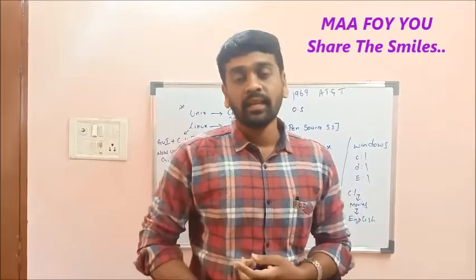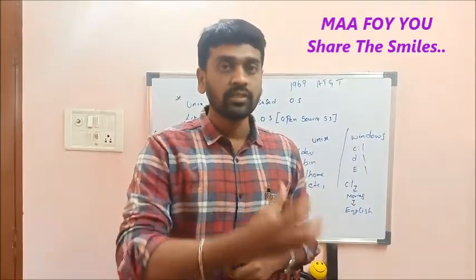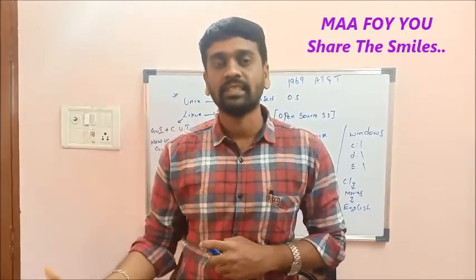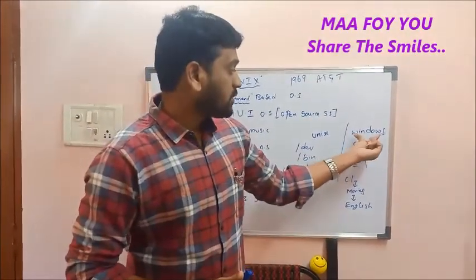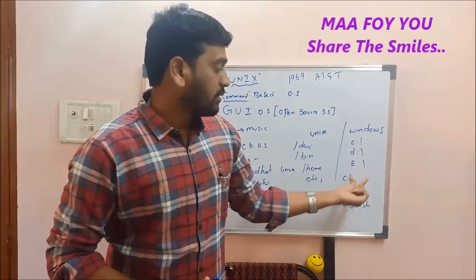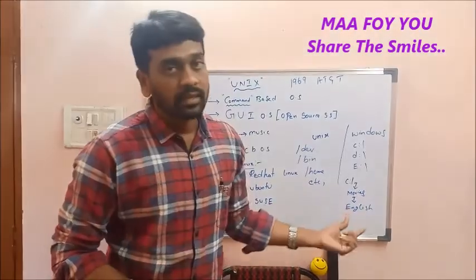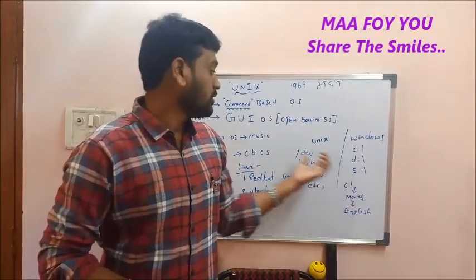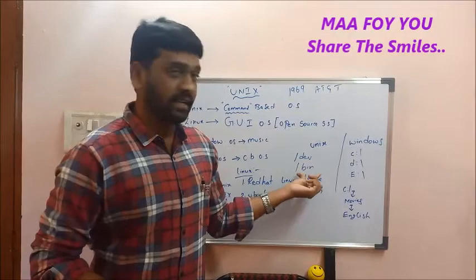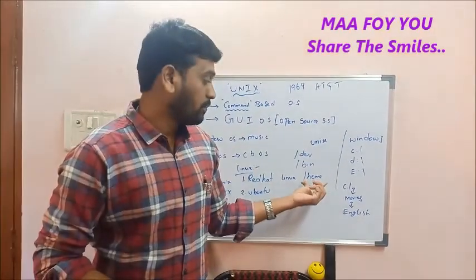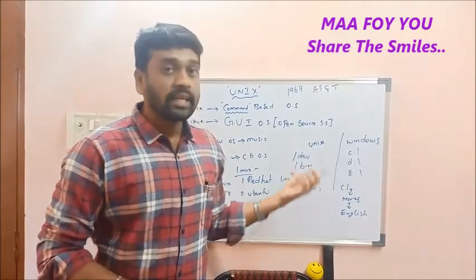There is a file system where data is stored and transferred through files. In Windows, we have C drive, D drive, E drive for storage. In Unix, we have a directory structure with a root directory, home, user details, and dev — all under one directory.